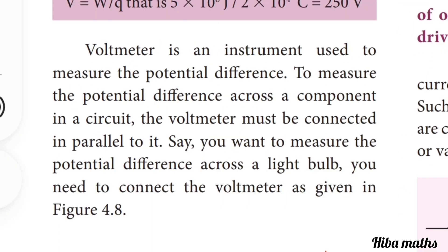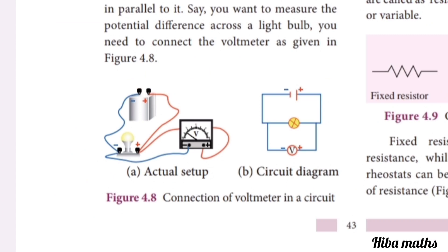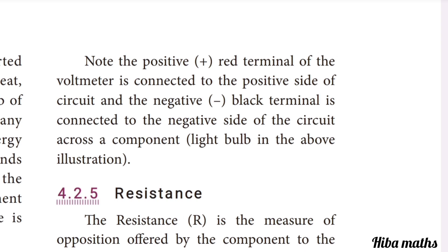A voltmeter is an instrument used to measure potential difference. To measure the potential difference across a component in a circuit, the voltmeter must be connected in parallel to it — unlike the ammeter which is connected in series. The positive red terminal of the voltmeter is connected to the positive side of the circuit, and the negative black terminal is connected to the negative side, across the component.